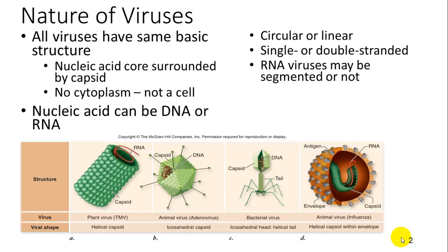Within that capsid, they do not have cytoplasm — they don't have the fluid filled with nutrients and waste products — because they don't need it. Instead, the virus hijacks cells and that's how it survives.